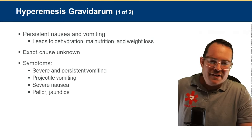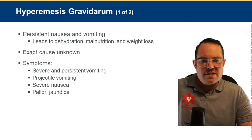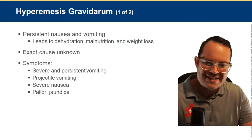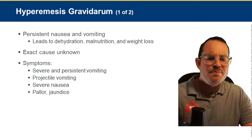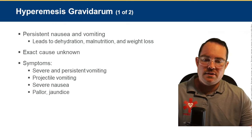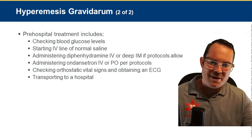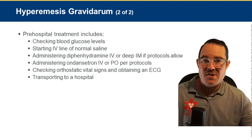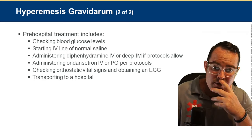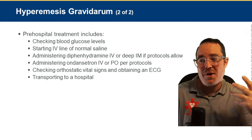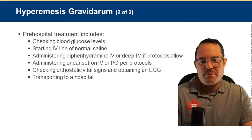Hyperemesis gravidarum is persistent, severe nausea and vomiting — sometimes called morning sickness but much worse. Signs include severe projectile vomiting, pallor, and even jaundice. Treatment: start an IV and administer diphenhydramine (Benadryl) IV or IM as the first-line treatment. Ondansetron (Zofran) can also be considered at the same dose.